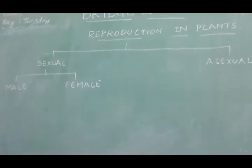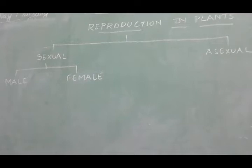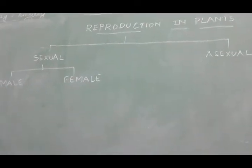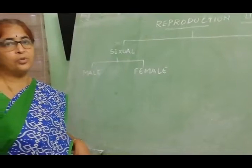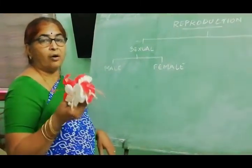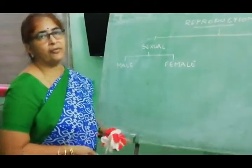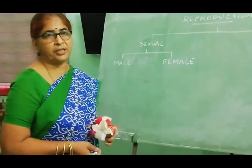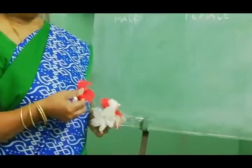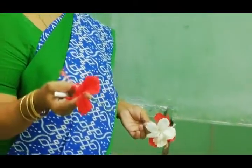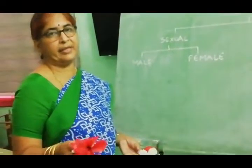Today we are mainly going to see about the sexual type of reproduction. The sexual type of reproduction in plants takes place through flowering. All flowering plants have the characteristic feature of sexual type of reproduction. In a plant, the flower is the most important thing where we can find the male gametes as well as the female gametes.